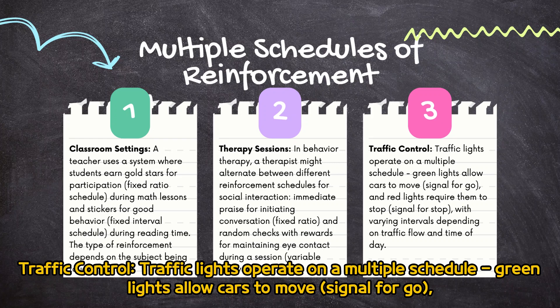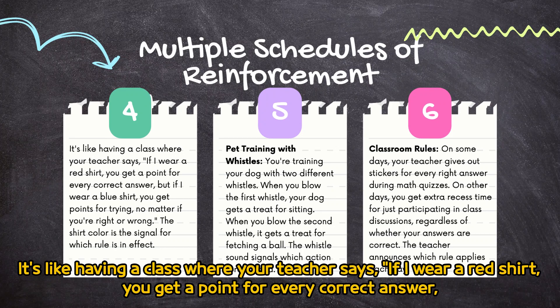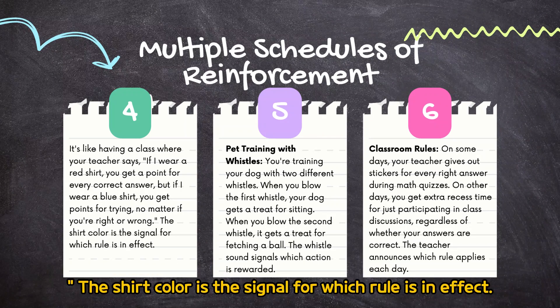Traffic: controlled traffic lights operate on a multiple schedule. Green lights allow cars to move (signal for go), and red lights require them to stop (signal for stop), with varying intervals depending on traffic flow and time of day. It's like having a class where your teacher says: if I wear a red shirt, you get a point for every correct answer; but if I wear a blue shirt, you get points for trying, no matter if you're right or wrong. The shirt color is the signal for which rule is in effect.